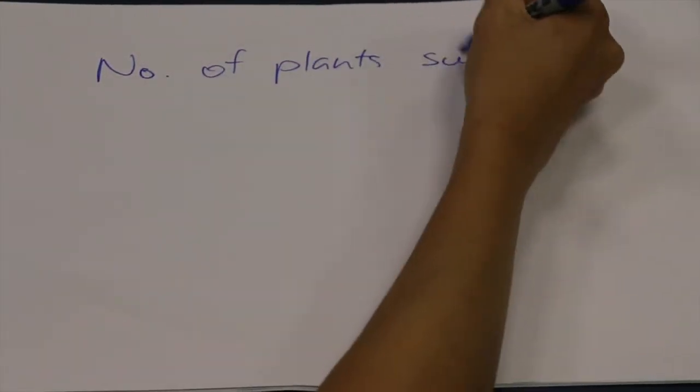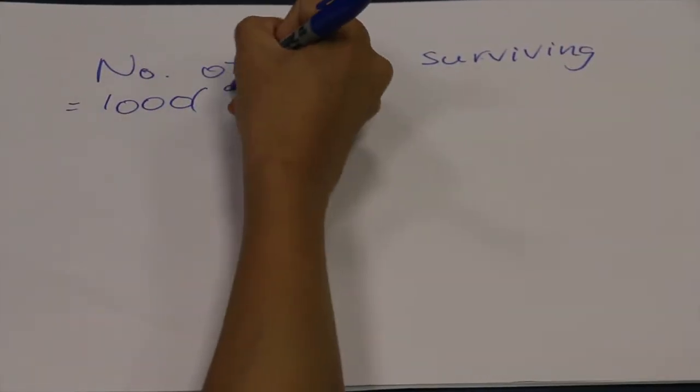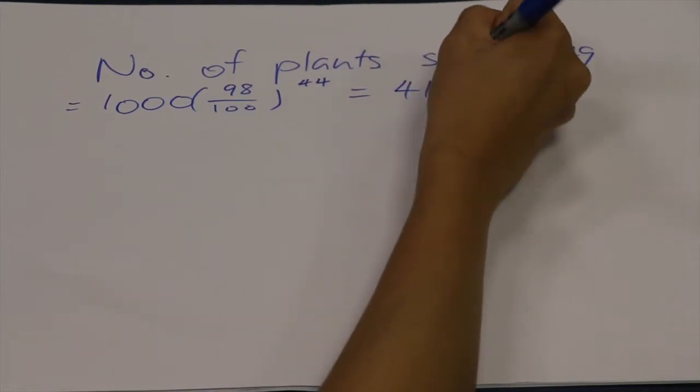The number of plants that will survive is 1000 times 98% to the power of 44, which would give us 411 plants.